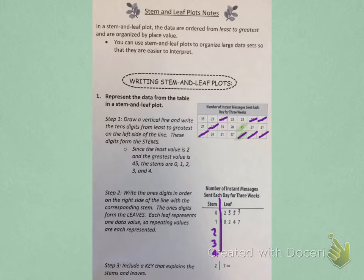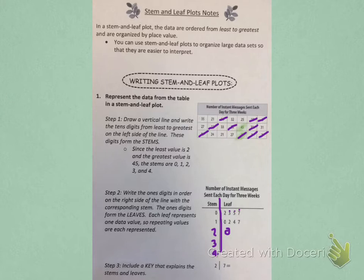I don't see any more numbers in the table that start with one, so now we're going to look for numbers that start with two — numbers whose tens value is two. The lowest one I see is twenty, so on the right side of our vertical line next to the two we're going to put a zero. And now I see a twenty-one, so we're going to put a one. I see another twenty-one, so we're going to put another one — and yet another twenty-one, so we're going to have to put that there as well.